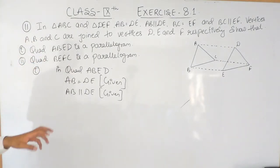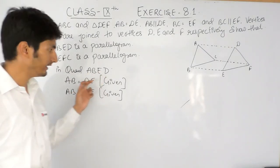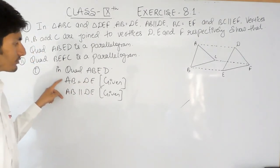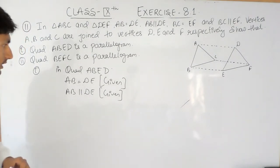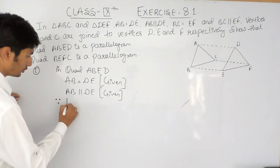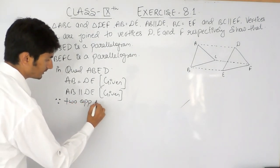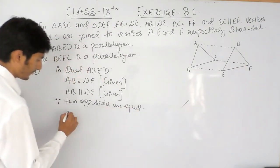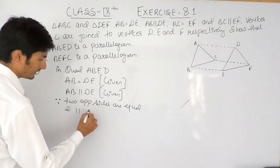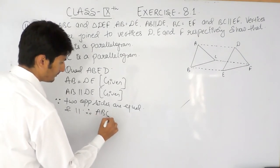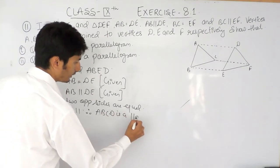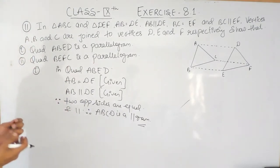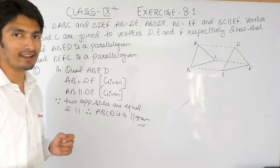Now, if in a closed four-sided figure its two opposite sides are equal and parallel, then that closed figure is known as a parallelogram. So, because two opposite sides are equal and parallel, therefore quadrilateral ABED is a parallelogram. This is the property of a parallelogram — its two opposite sides are parallel and equal.